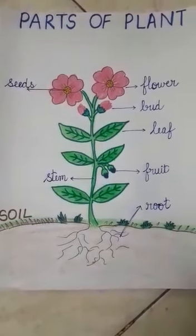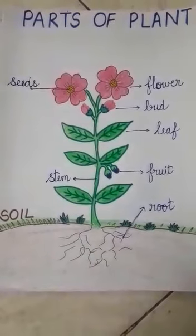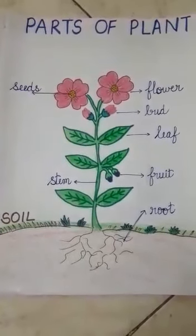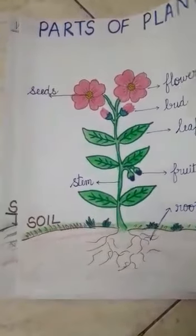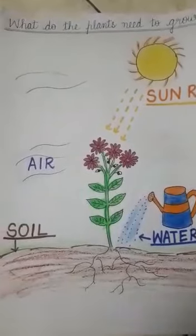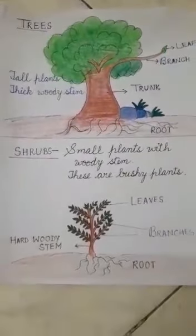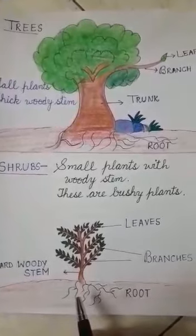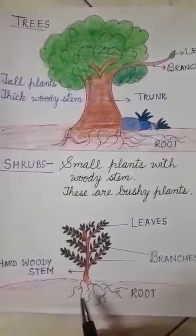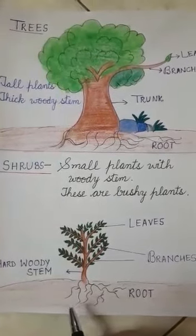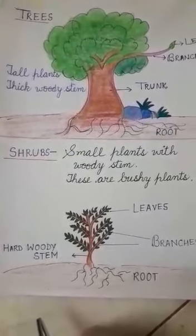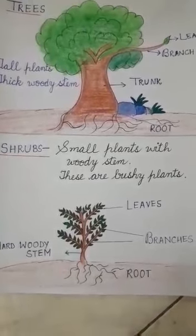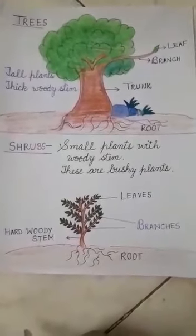Thanks students. The topic of today's video is different types of plants. There are different types of plants we can see around us. We have already done parts of a plant. Now we are going to study about different types of plants. Plants are very important for us. They give us oxygen, they give us food, they give us many useful things. They make our earth beautiful. So we should take care of trees and plants — we should water them and plant more and more trees.